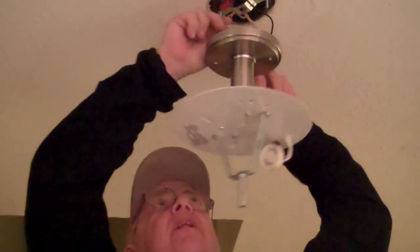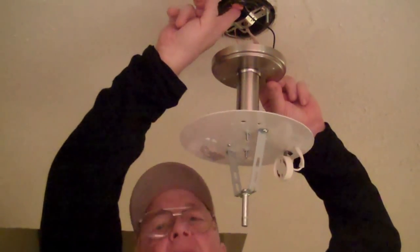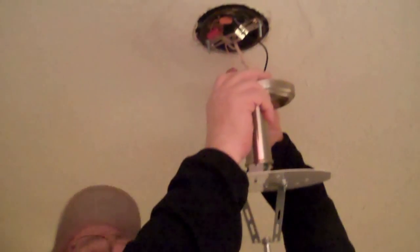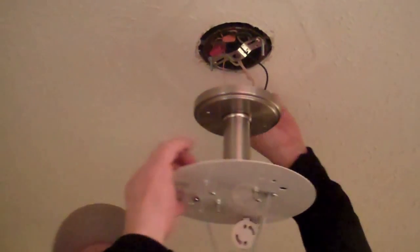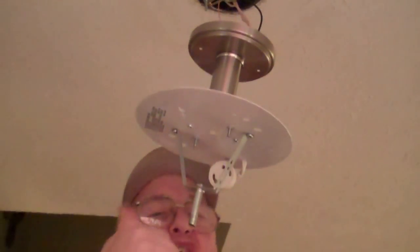We're ready to connect some wire and hang the fixture. We've connected the ground to the ground, the neutral black to the black, and the white hot to the white. With wire nuts, we're ready to attach to the ceiling. Yes! There we go! Yay!